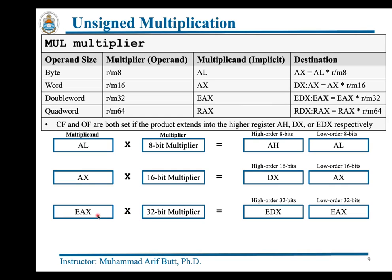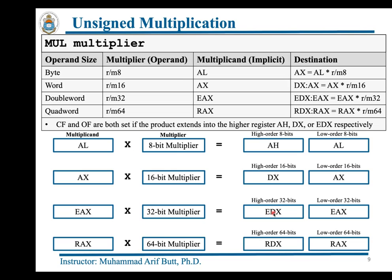Similarly, if the multiplier or operand is 32 bits, the implicit multiplicand is in EAX, and the implicit destination is in two registers: EDX and EAX. The lower-order 32 bits of the result go in EAX and the high-order 32 bits go in EDX.